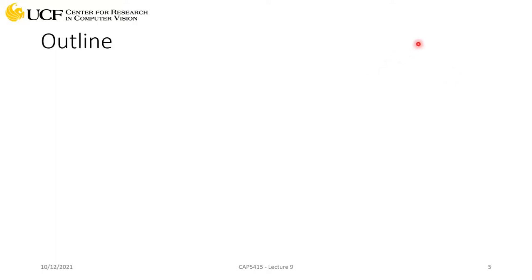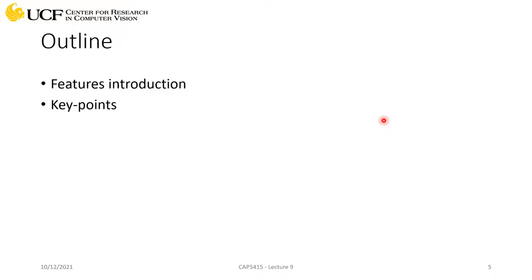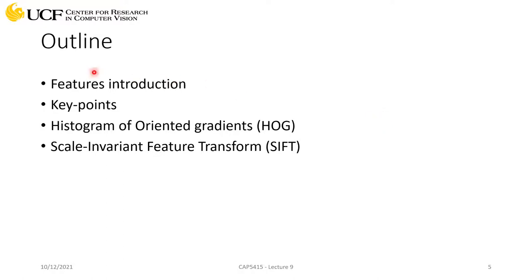This is the first lecture going into more detail. So far we have only seen edge detection, and detecting edges is a problem, but it's not extracting meaningful information from your images. Today we are going to talk about features. The outline covers what features are, why they are useful, why we need to extract features, and then three different types of features.